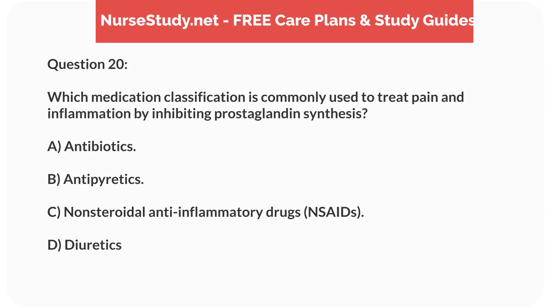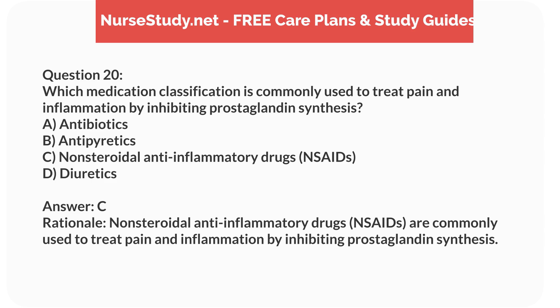Question 20. Which medication classification is commonly used to treat pain and inflammation by inhibiting prostaglandin synthesis? A. Antibiotics. B. Antipyretics. C. Nonsteroidal anti-inflammatory drugs (NSAIDs). D. Diuretics. Answer: C. Rationale: Nonsteroidal anti-inflammatory drugs (NSAIDs) are commonly used to treat pain and inflammation by inhibiting prostaglandin synthesis.